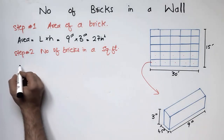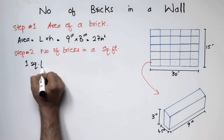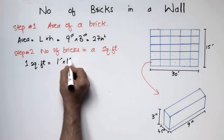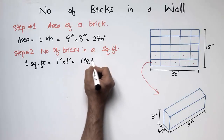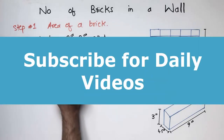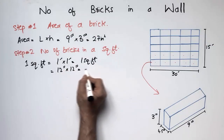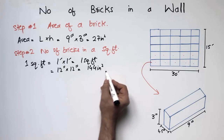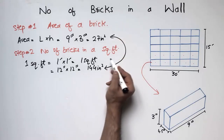One square foot equals one foot by one foot. Since one foot equals 12 inches, one square foot equals 12 inches times 12 inches, which comes out to be 144 square inches. These two quantities must be in the same unit.